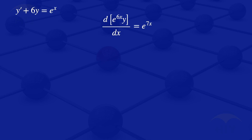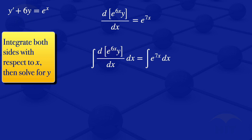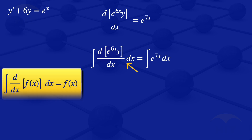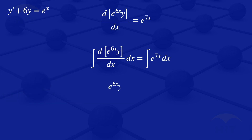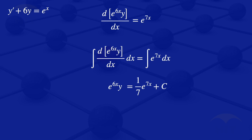The next step is to integrate both sides of this equation with respect to x, then solve for y. On the left-hand side, integrating the derivative gives us the function itself: e^(6x)·y. On the right-hand side, using the rule that ∫e^(ax) dx = (1/a)·e^(ax) + C, with a = 7, we get (1/7)·e^(7x) + C.